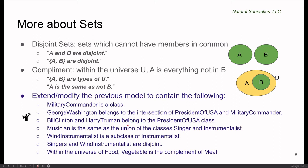Describe some additional members of the president of USA class, let's say Bill Clinton and Harry Truman. Then, separately, define musician as being equivalent to the union of the classes singer and instrumentalists. Then define wind instrumentalists as a subclass of instrumentalists and say that singers and wind instrumentalists are disjoint, as one might expect them to be at least at any point in time, since it would be hard to sing and blow on a wind instrument at the same time. And finally, within some universe, let's say the class food, define vegetable as the complement of meat.